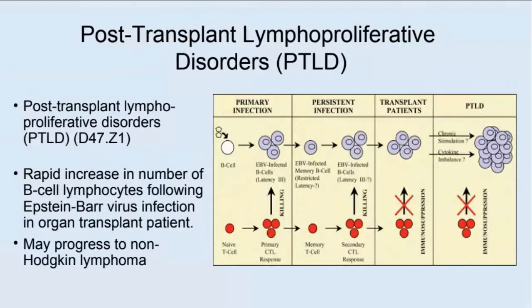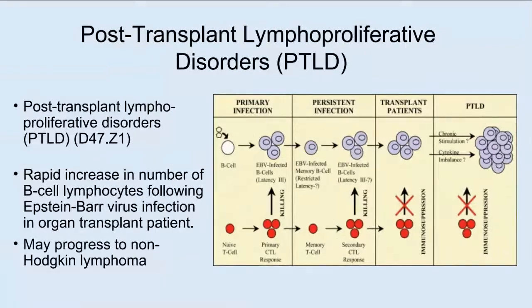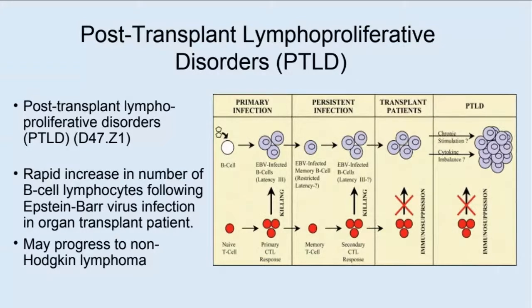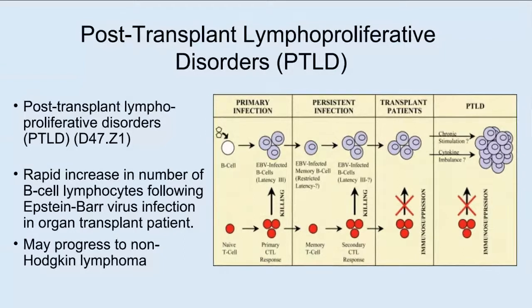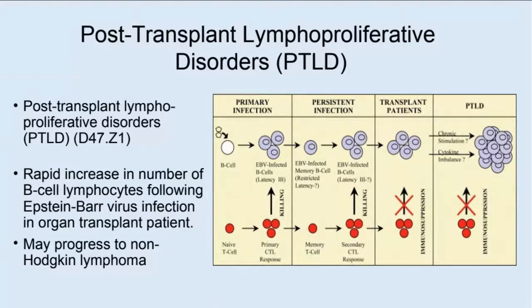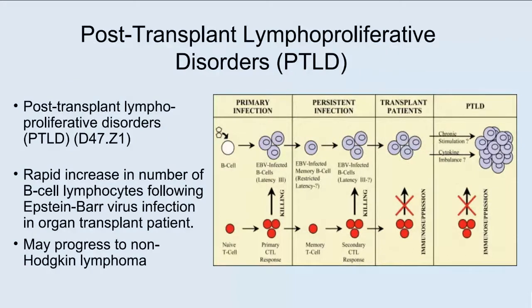A final complication is post-transplant lymphoproliferative disorders, PTLD. This occurs when a rapid increase in the number of B-cell lymphocytes follows Epstein-Barr virus infection in an organ transplant patient. The infection is persistent and can result in PTLD, which may progress to non-Hodgkin lymphoma. PTLD is coded as D47.Z1.